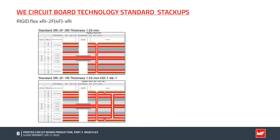HDI designs are also possible. For example, microvias — double-sided from the top to inner layer 1 and from the bottom to the next inner layer. The buried vias run from layer 2 to layer 9.